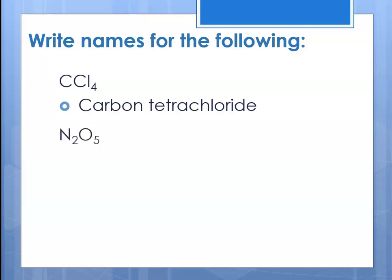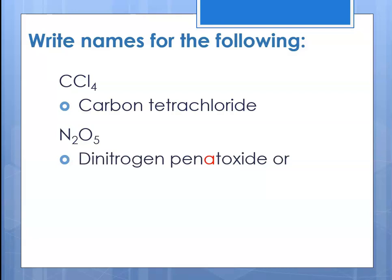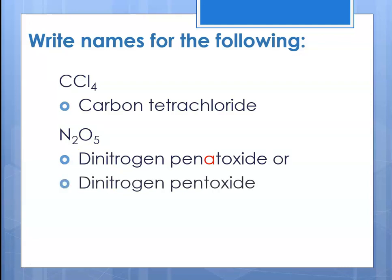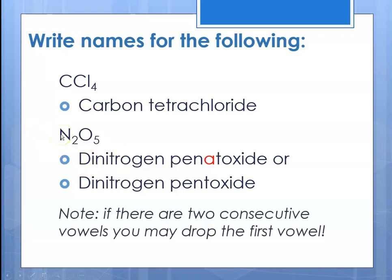For N2O5, we would name that dinitrogen pentoxide, because there are five oxygens. The prefix is attached to the element it applies to — 'di' is attached to nitrogen because there are two of that element, and 'penta' is attached to oxide because there are five oxygens. So make sure you're putting your prefix in the right place: dinitrogen pentoxide. Note that if there are two consecutive vowels, you are allowed to drop the first vowel to make it easier to say.